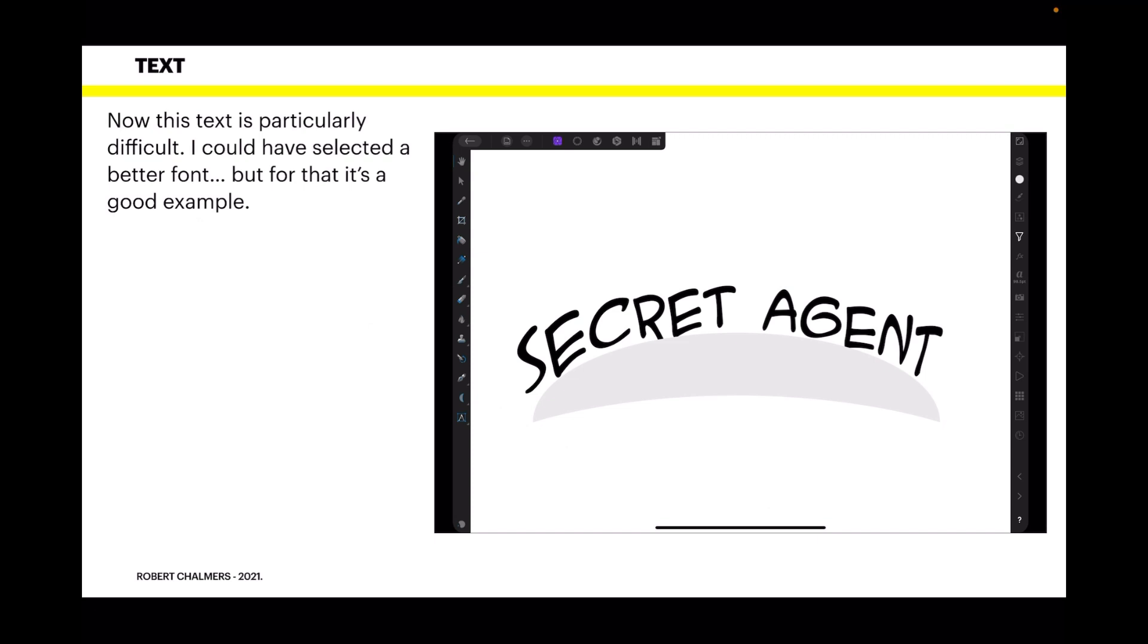Now this text is particularly difficult. Why? Because it's an odd font. It's a secret agent font. I could have selected a better font or one that's not quite so already shaped. But for what I'm using it for, it's a good example. Now what I've done there is by dragging on those selected deformed points, I've pulled the text down so it more or less sits along the curve of that shape. It's not ideal for curving text. That's another thing altogether. This is actually deforming the text to fit to where you want it to go. And I'll show you a really good example of that at the end.